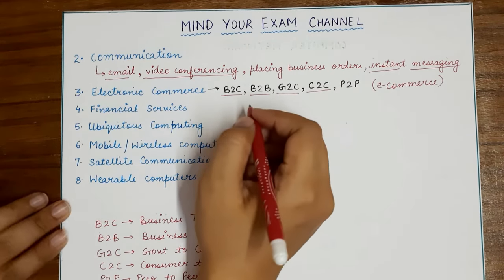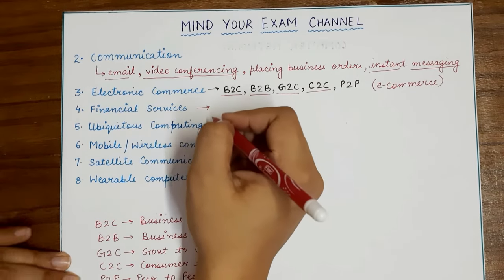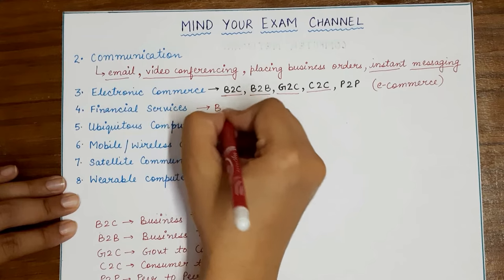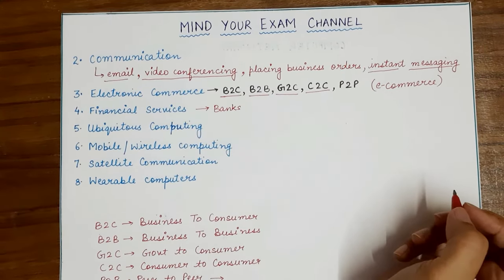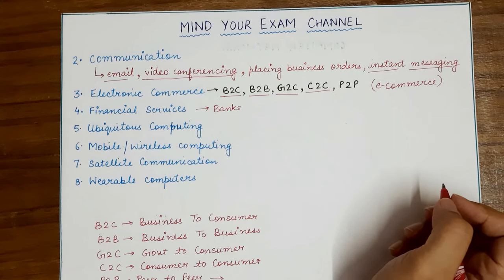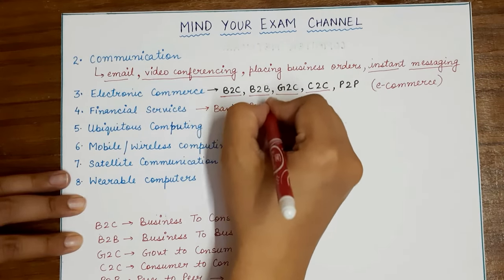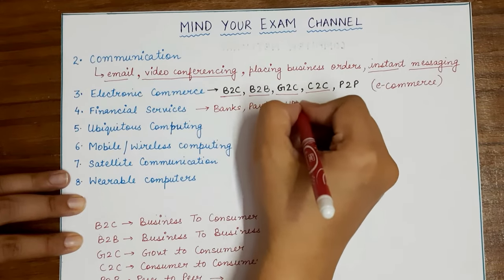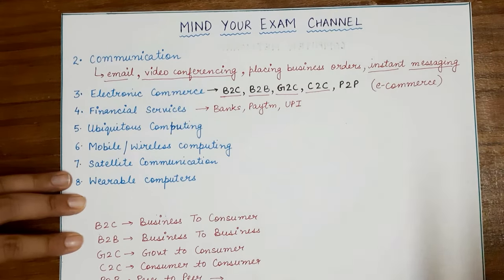The fourth use of computer networks is financial services. The easiest example is the banking services provided online — internet banking, PhonePe, and Paytm that we use. These are services we access through the internet via their websites, and again computer networks play a key role.